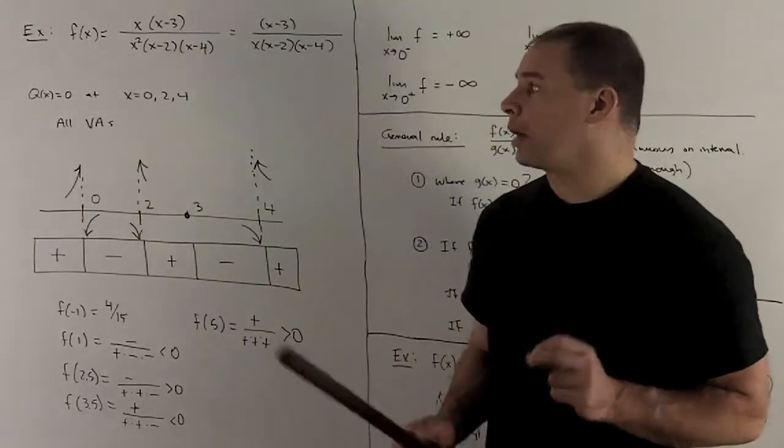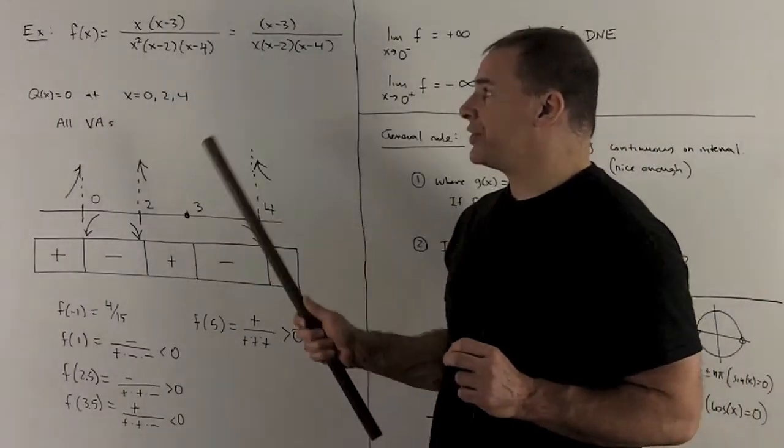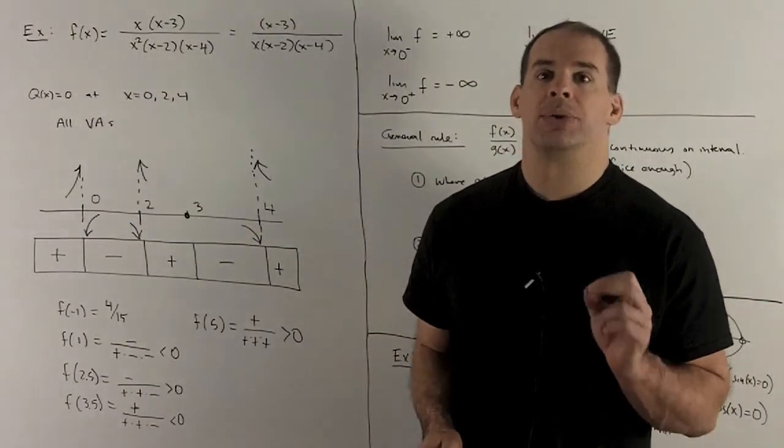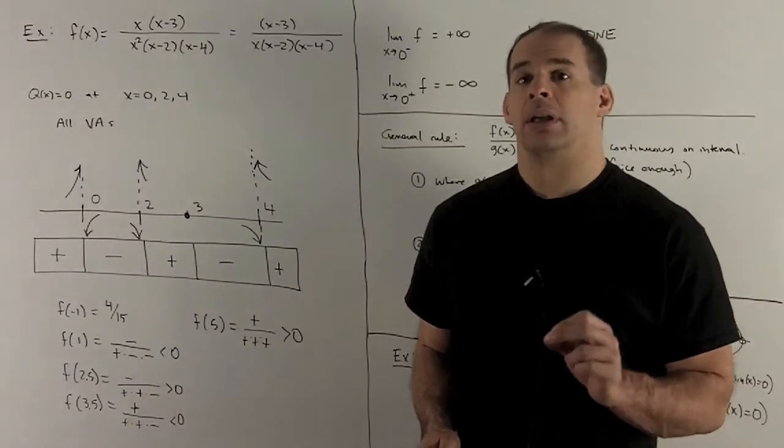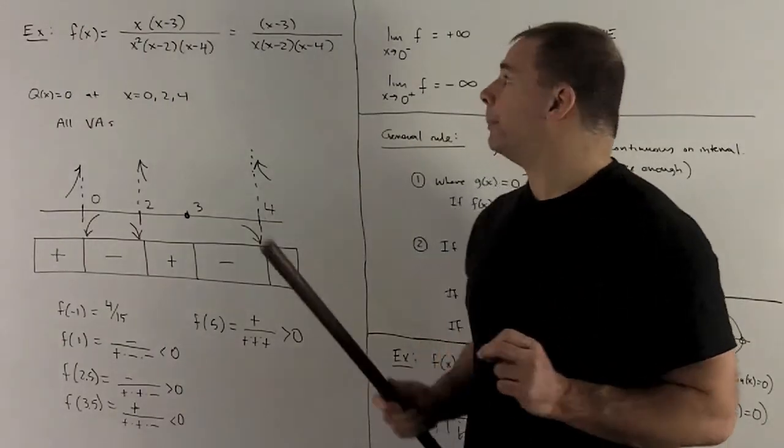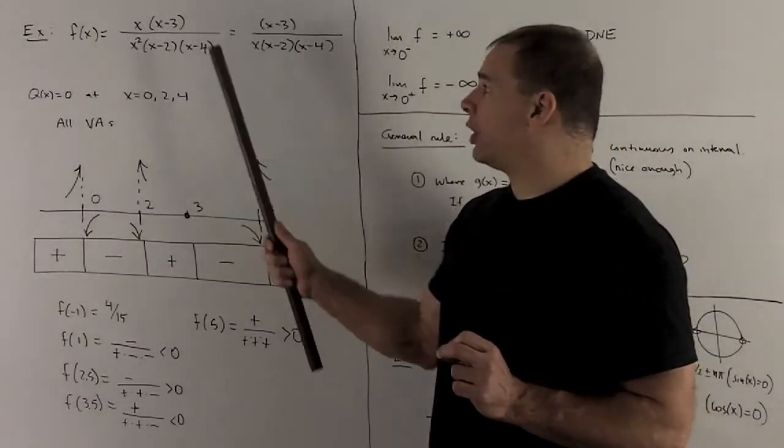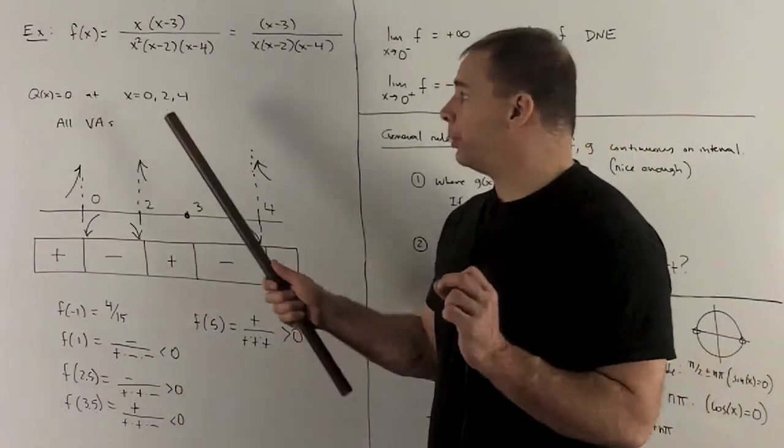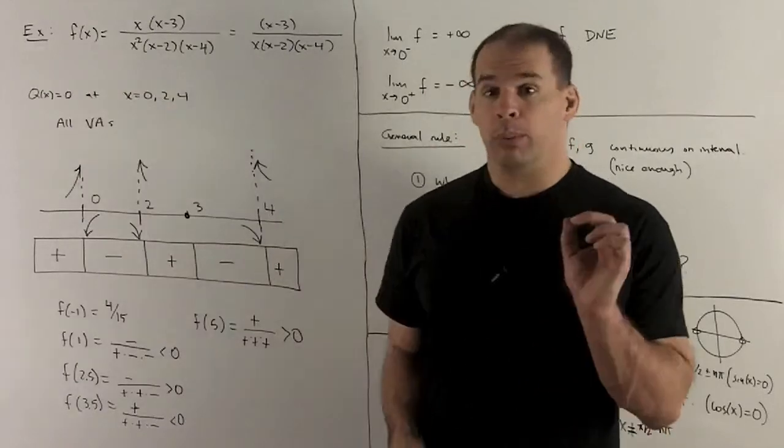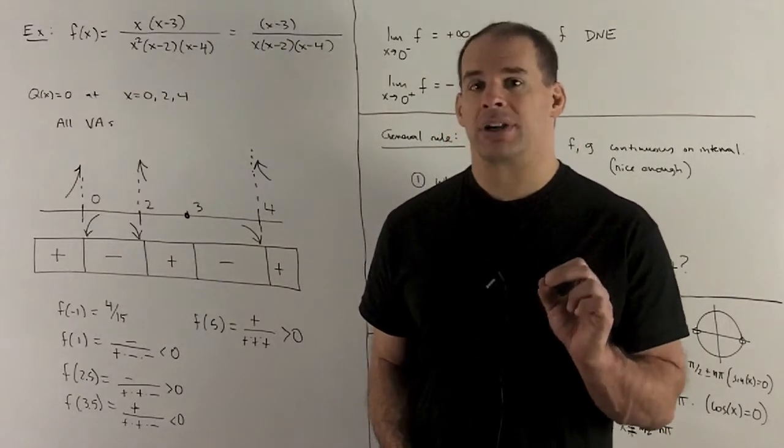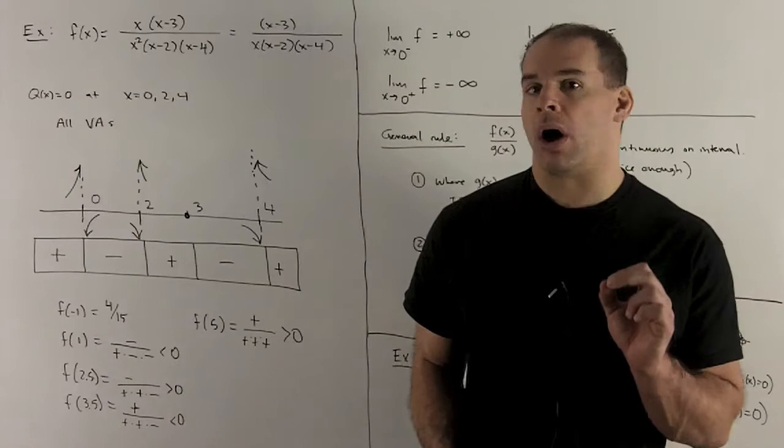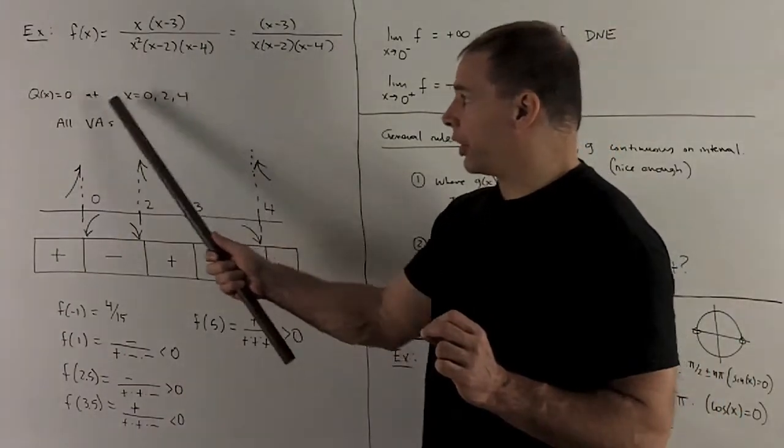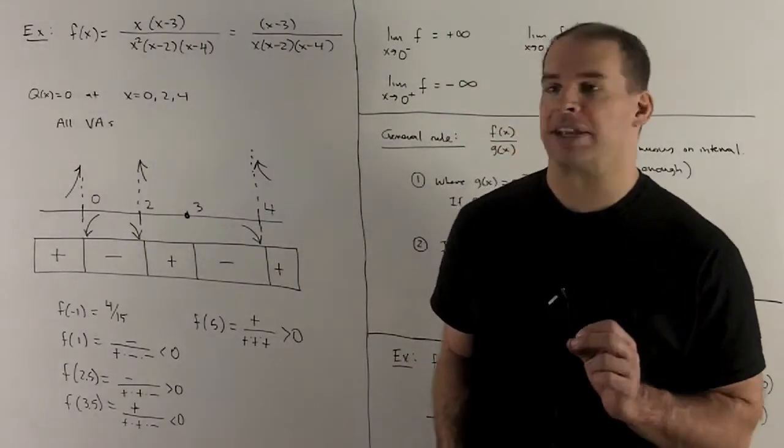Now, we start by taking a look at where the denominator is equal to 0, so it's going to give me the points x equals 0, 2, and 4. We next check to see what cancels out. The x's are going to cancel, but there's not enough to get rid of the x in the bottom. So, we note there's no removable discontinuities. We couldn't remove any of those completely. So, all of our points here are going to correspond to vertical asymptotes.